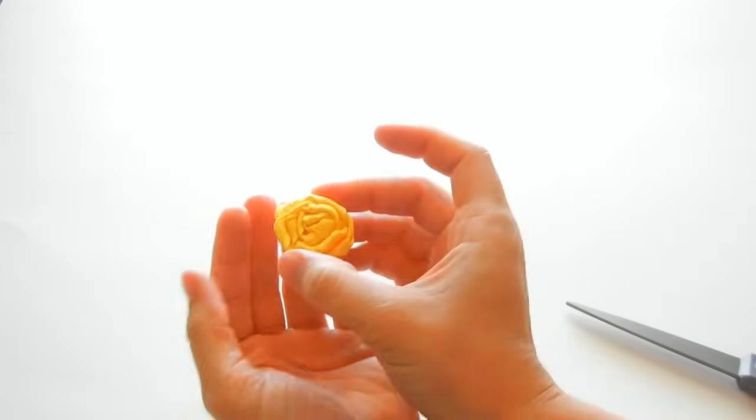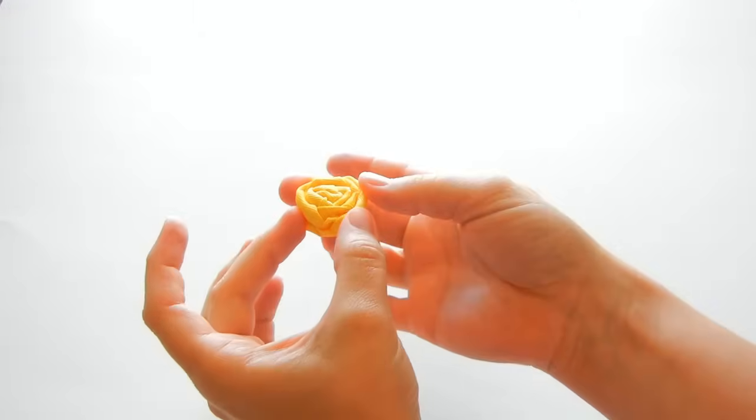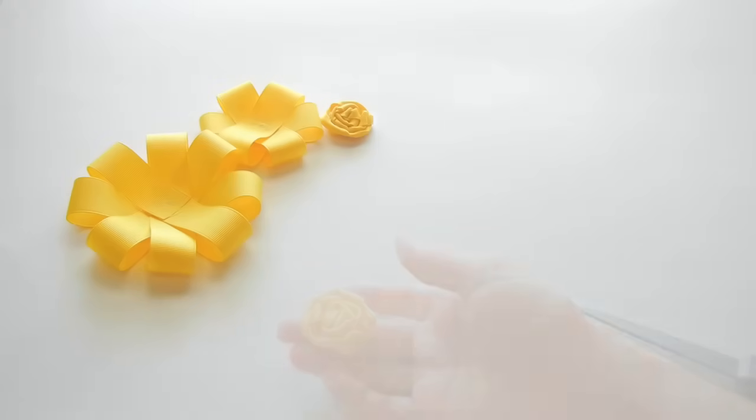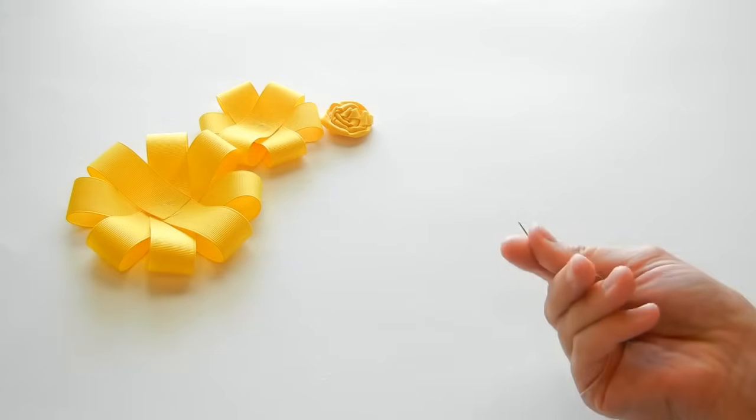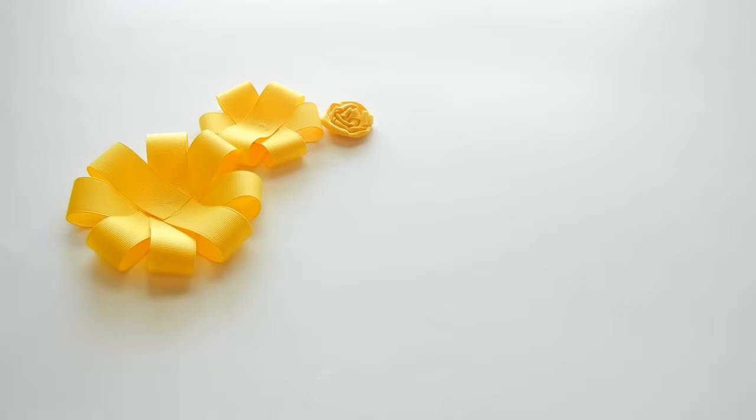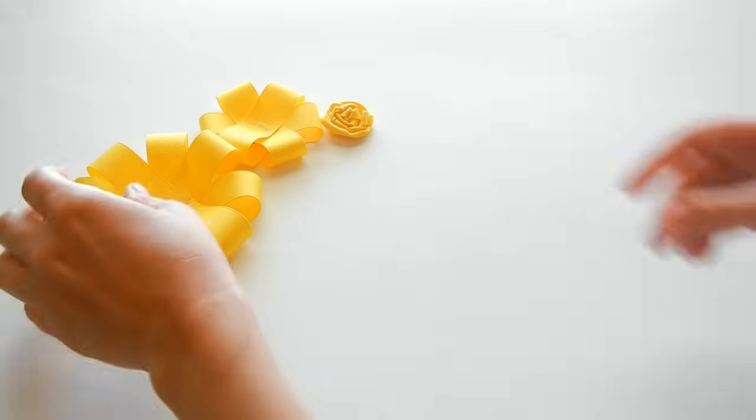That finishes our rolled flower and we can add it to the two layers. Now you can either glue your pieces together or you can use your needle and thread and stitch them together. Either way works.